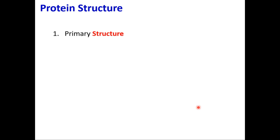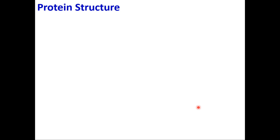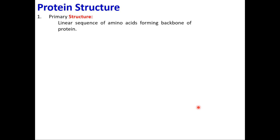Looking at protein structure, there are four different levels: primary, secondary, tertiary, and quaternary. Primary structure is the simple linear sequence of amino acids forming the backbone of the protein.